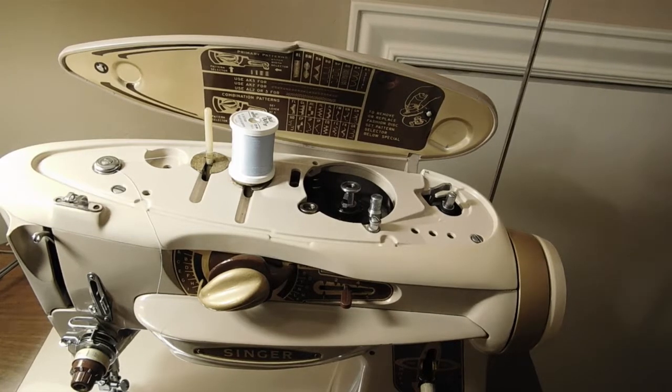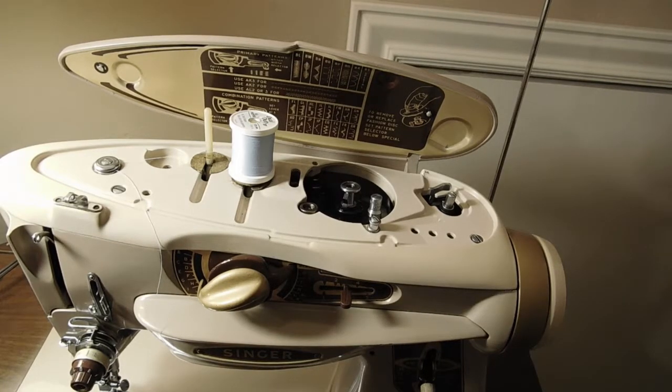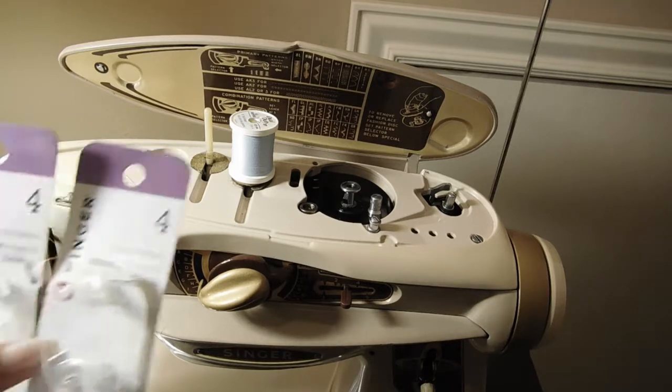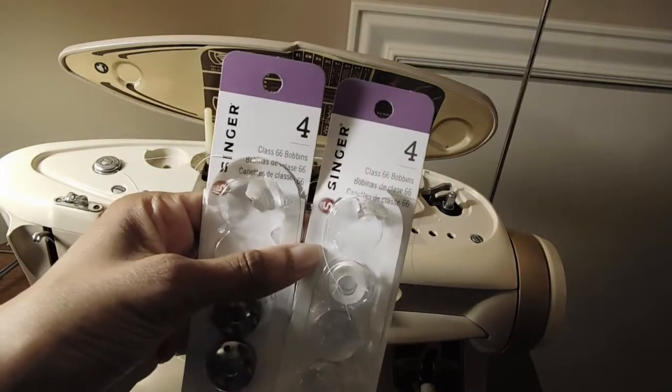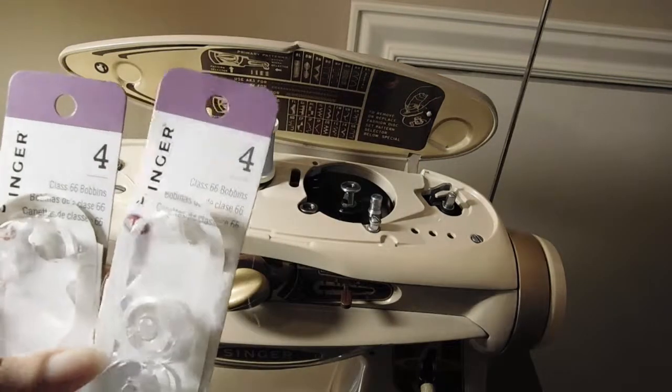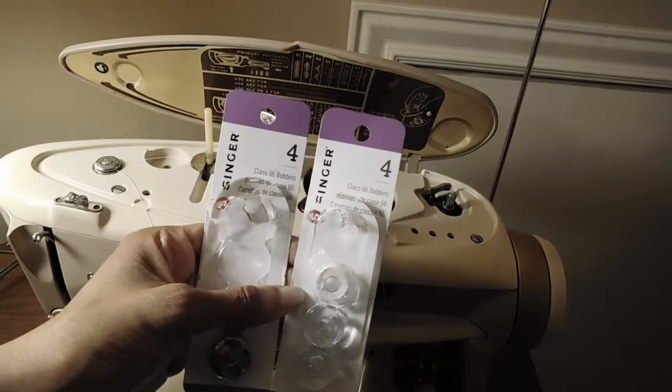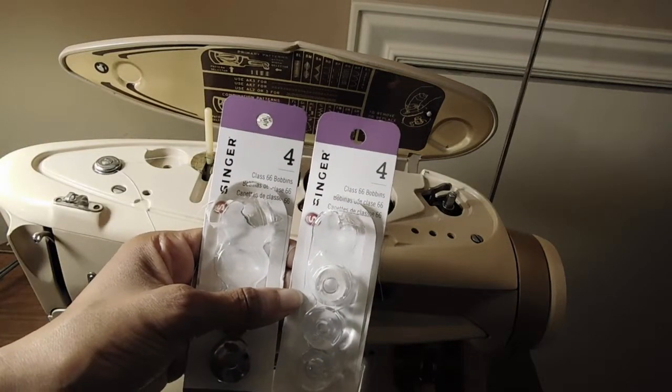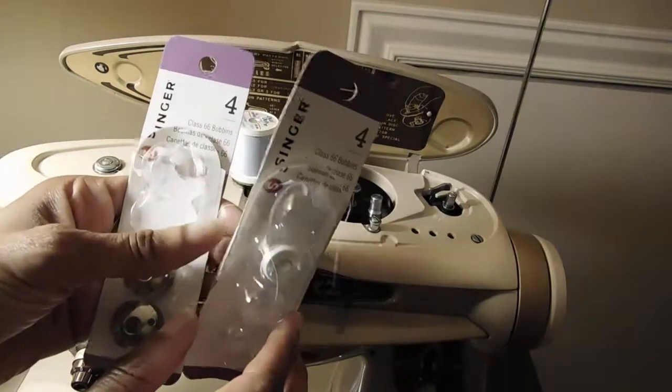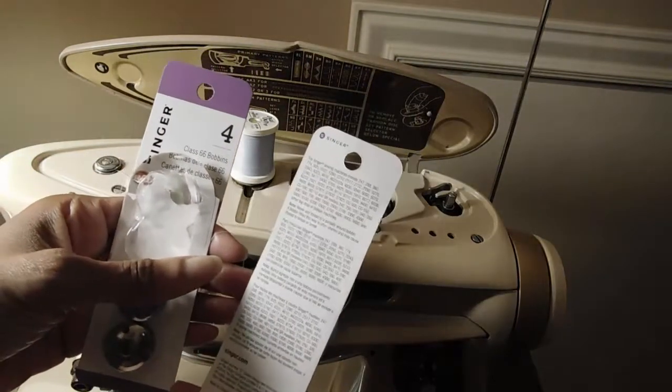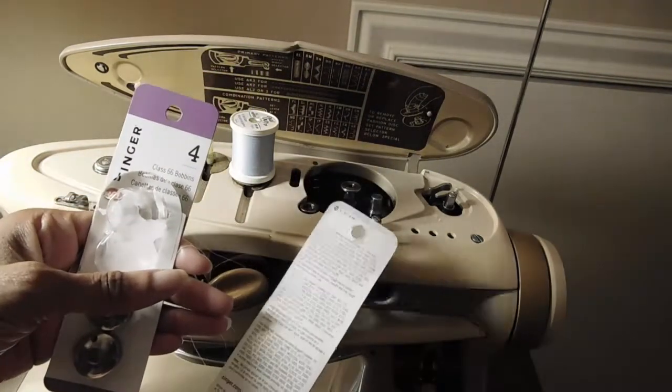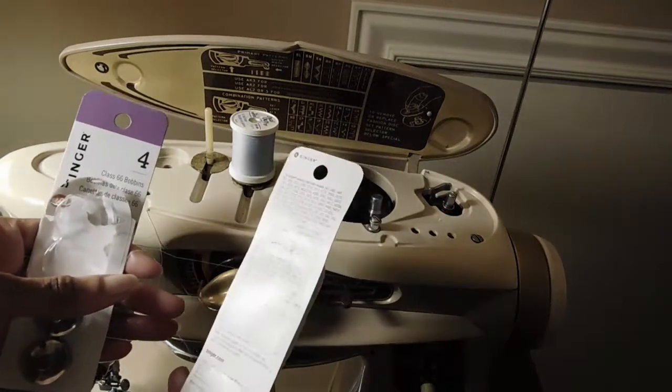One other thing I would like to mention is the type of bobbin for this machine. These bobbins, metal or plastic that you find in Joann, are not for this machine. And I didn't know when I had purchased this because I failed to look on the back to see that this machine is not mentioned on the list.